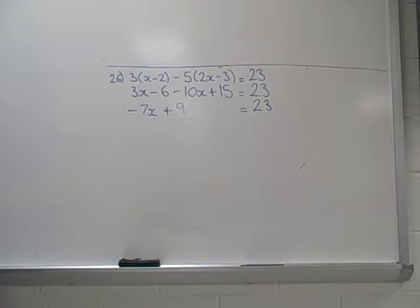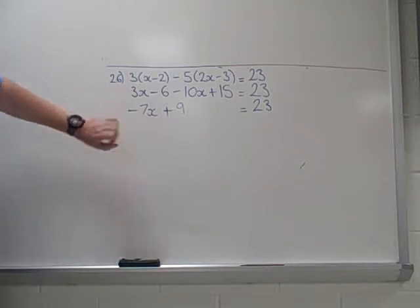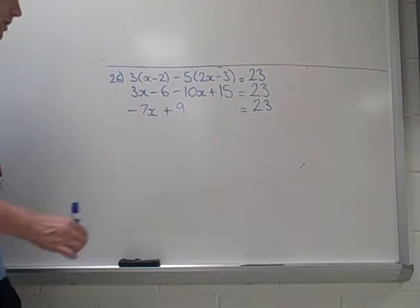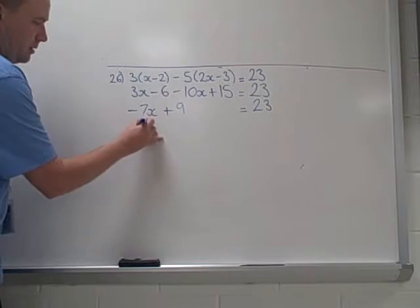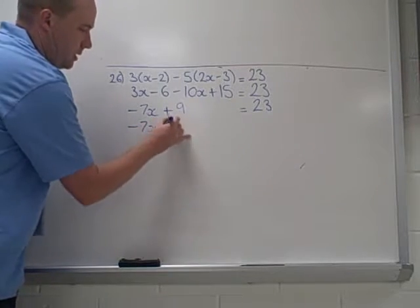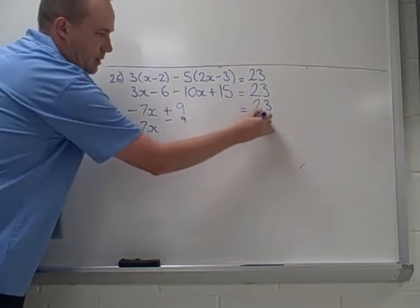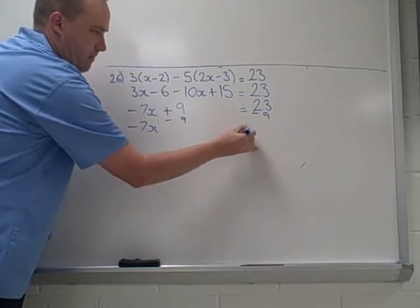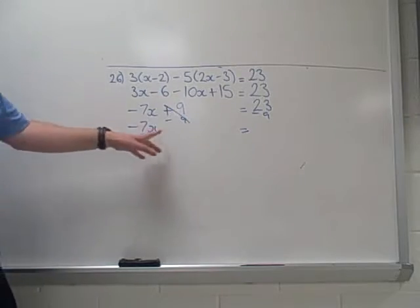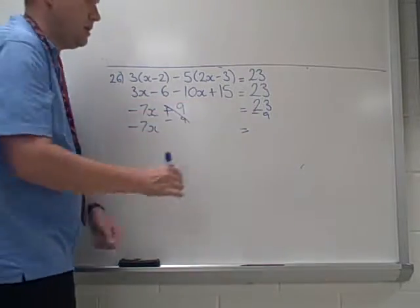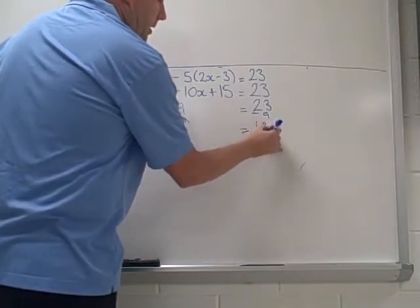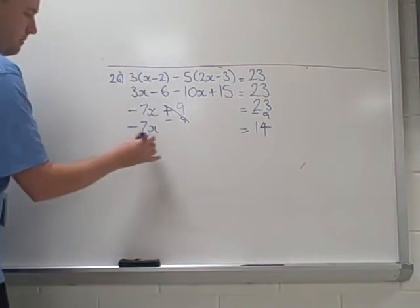Now we can start solving this. I've got my x's on one side, so I just want to move this term to the other side — I've got terms on opposite sides here. So subtract 9, subtract 9. Now I'll cancel. So negative 7x equals 23 take away 9, which is 14.